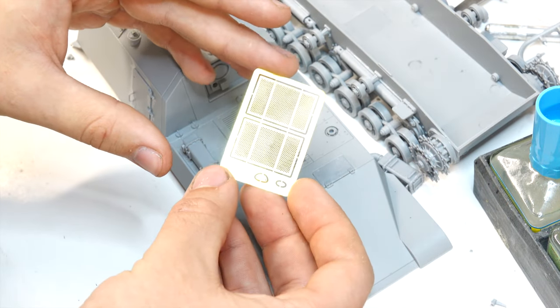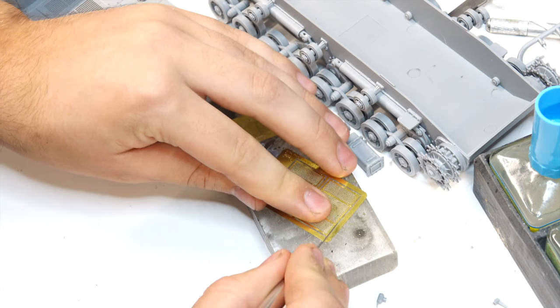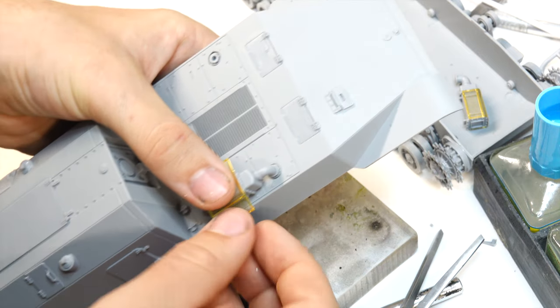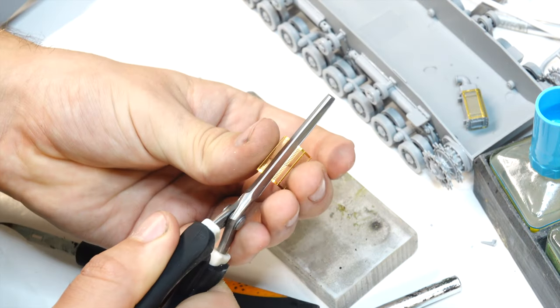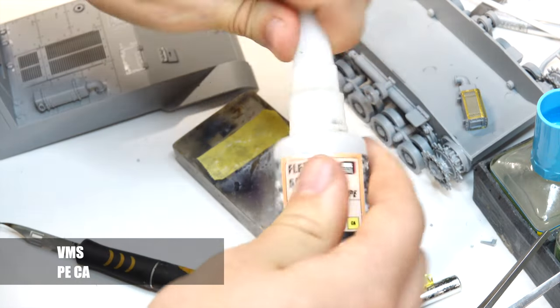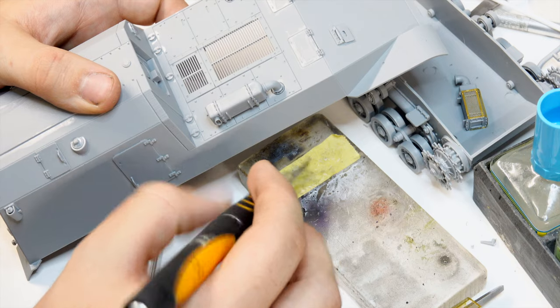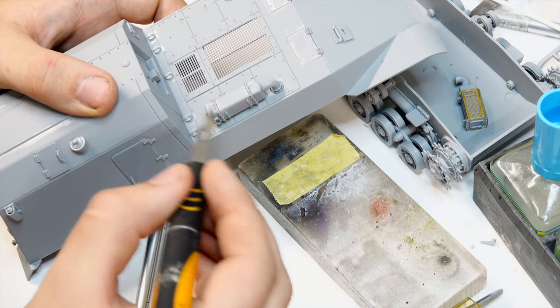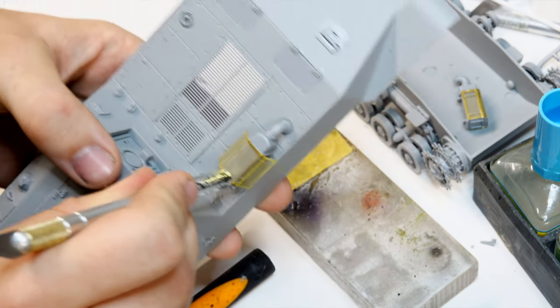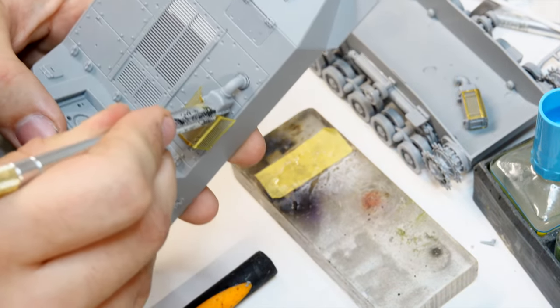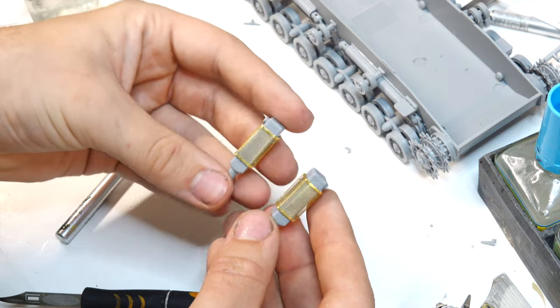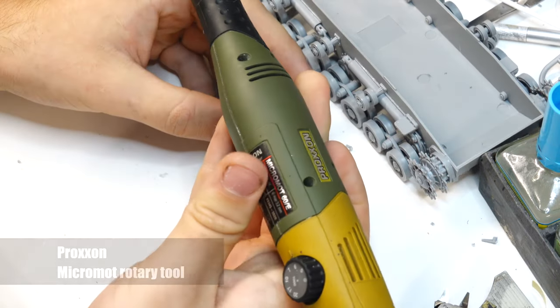Here we've got some metal photo-etch parts for the exhaust grills. I cut these off with a sharp blade and a chunk of hard acrylic. Some people recommend using a ceramic tile, but it doesn't work too well because it dulls the blade way too quickly. I bend them into shape using some pliers and my hands. Before attaching them, I use simple super glue.